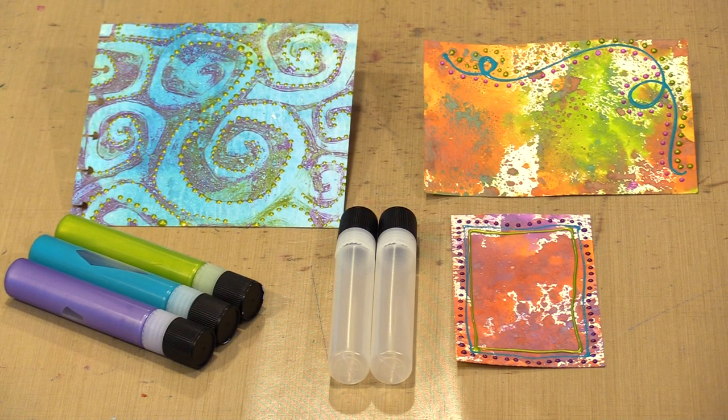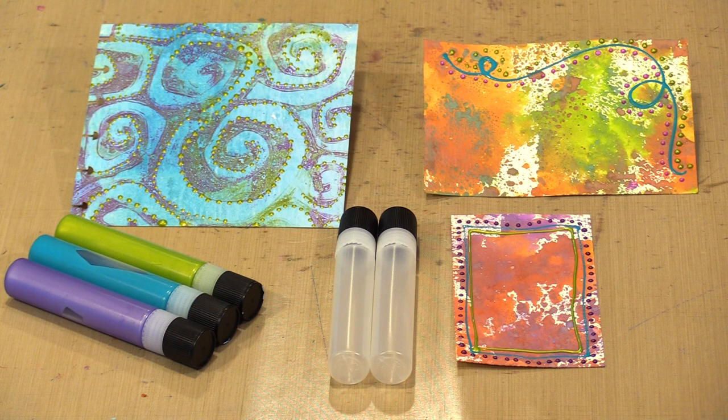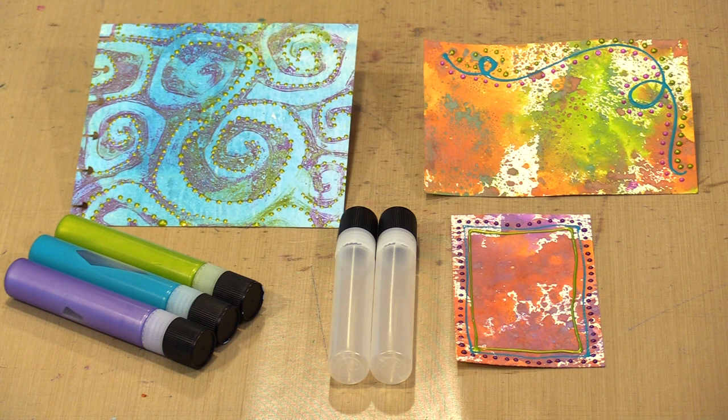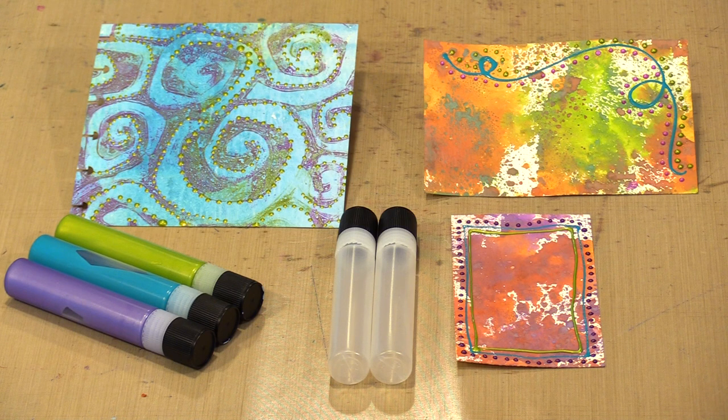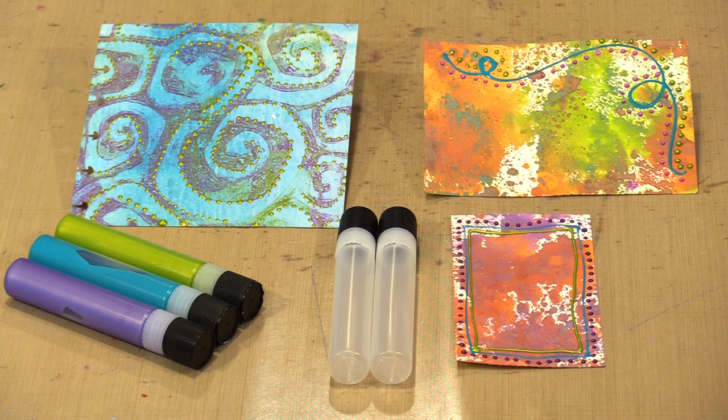Being able to write and scribble with paint expands the ways it can be used. While some paint is packaged with a tip that doubles as a writer, most aren't. Enter these empty liners which allow you to transform almost any paint or medium into a writer, doodler, or dot maker. In today's video, I will show you how to write and make marks of all kinds using them.